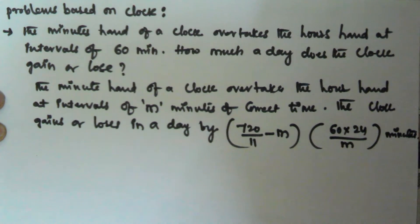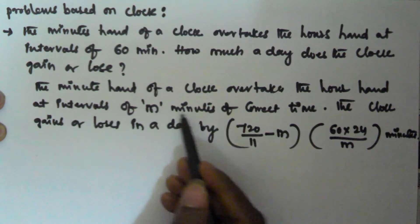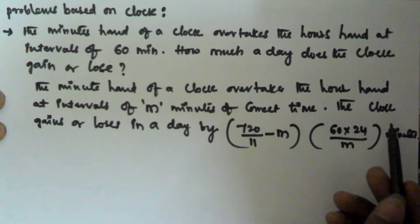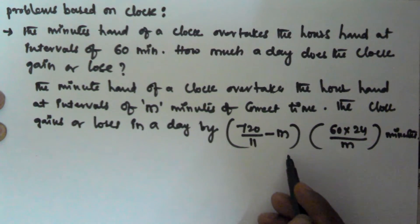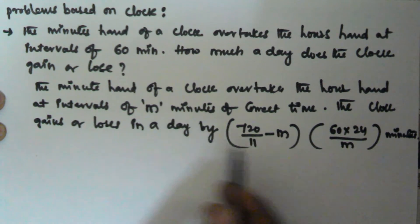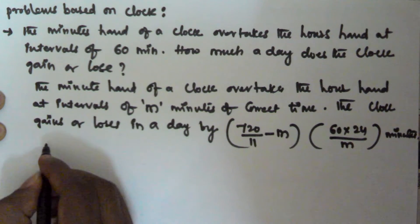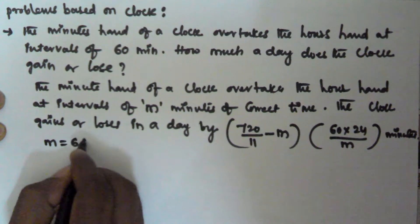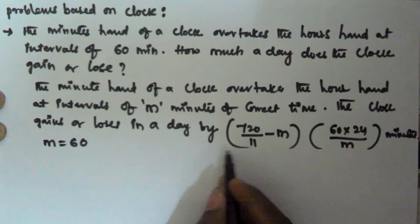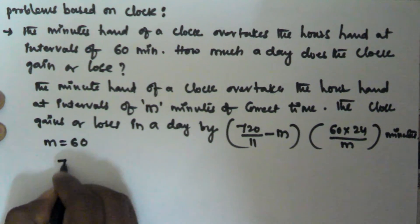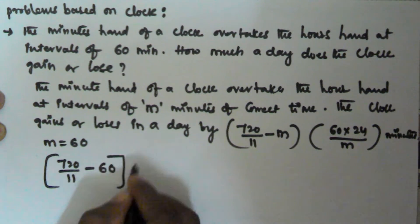So if the minutes hand overtakes the hours hand at the interval of correct time, the clock gains or loses this many minutes in a day. In our question, it overtakes the hours hand at the interval of 60 minutes, so m is equal to 60. We substitute this into the formula: 720/11 minus 60, into 60 times 24, divided by 60.